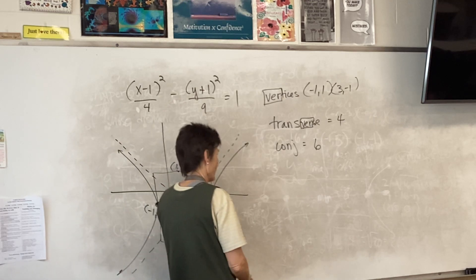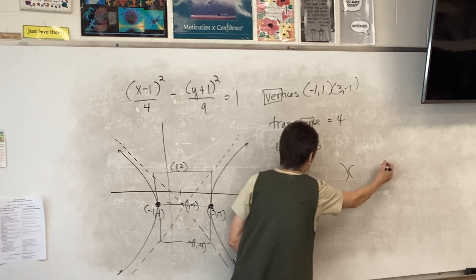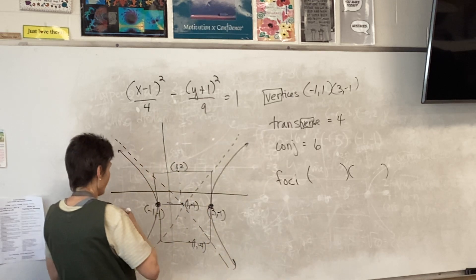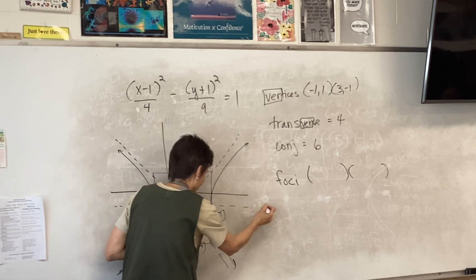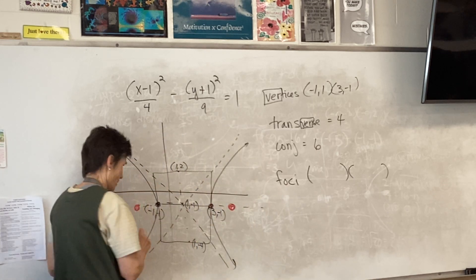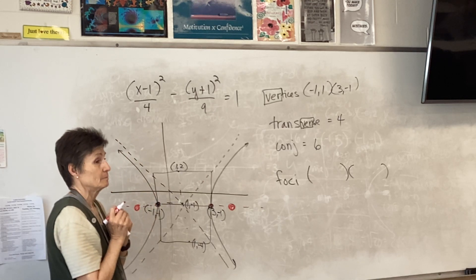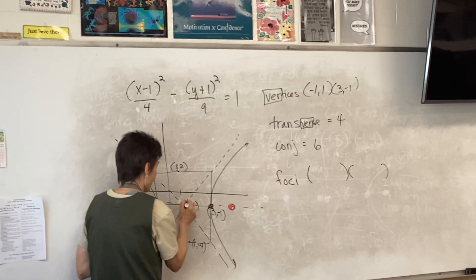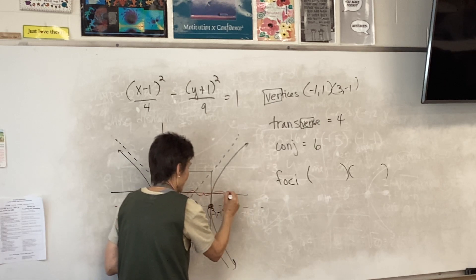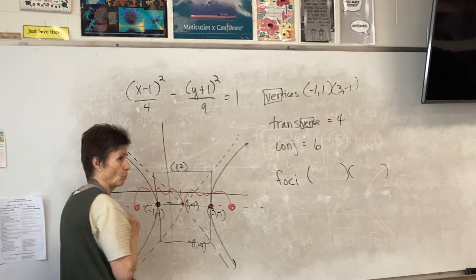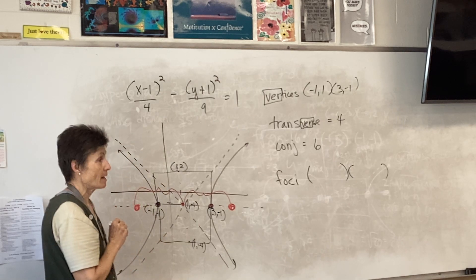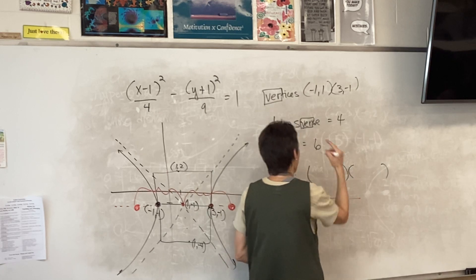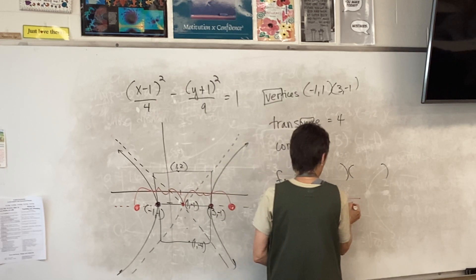We need to find where our foci are — two more points. Remember, they're going to be inside those parabola shapes. I'm going to figure out where they are by starting at my center and counting forward and backward some distance. How do I find that distance in a hyperbola? We add the denominators, so it's the square root of 13.